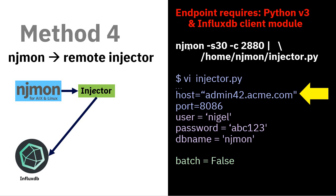Finally, method 4: use NJMon and remotely inject straight into the InfluxDB database. This requires your endpoints — virtual machines and logical partitions — to have Python 3 installed, plus the InfluxDB client module installed. If you can do that, this is low-hanging fruit. Same command as before, piping straight into the injector. The trick is that in the injector Python program, instead of localhost, you name the remote host you want to send data to — everything else stays the same. Many big production servers won't allow installing both Python and an InfluxDB client module, but if you can set up your infrastructure so new LPARs have those two things installed, this is an easy option.